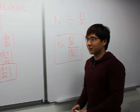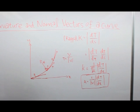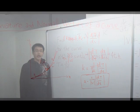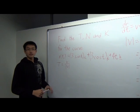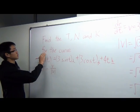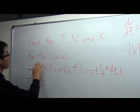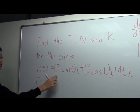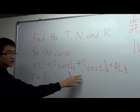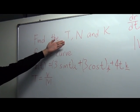Now let's try a question. So let's find the unit tangent vector, the normal, and kappa for the curve R(t) = 3 sin(t) i + 3 cos(t) j + 4t k. First we have to find the unit tangent vector.